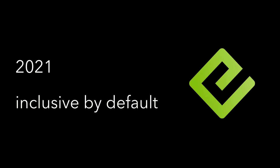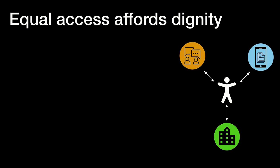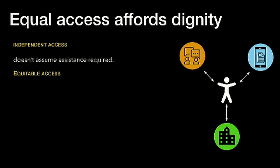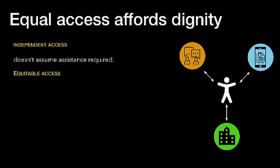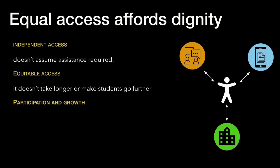Our icon is for an ePub. It's about ePubs, but it's about equal access, affording dignity for everybody. We want everybody to have independent access, so it doesn't assume that any assistance is required. From the Design for Dignity Retail Guidelines: equitable access for everybody; it doesn't take longer or make you go further; your content is accessible from the start; participation and growth is expected and normal for all readers, particularly for digital textbooks; and satisfaction — that any reader can feel engaged, at ease, safe and connected. Those are our broad design goals: affording dignity to everybody.